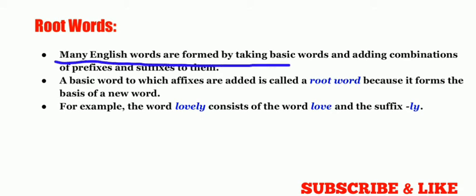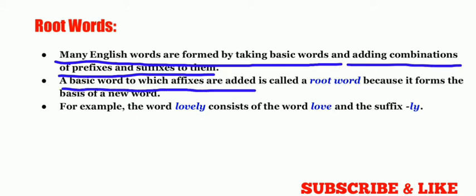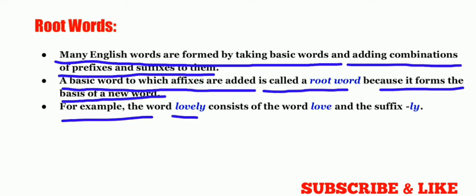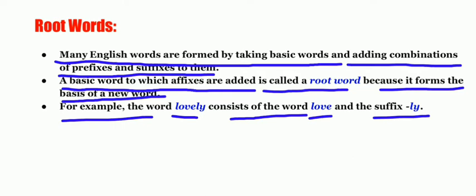Many English words are formed by taking basic words and adding combinations of prefixes and suffixes to them. A basic word to which affixes are added is called a root word because it forms the basis of a new word. For example, the word lovely consists of the word love and the suffix ly. So the root word is love and ly is suffix.